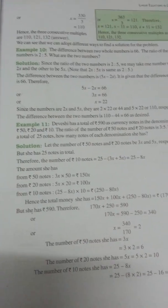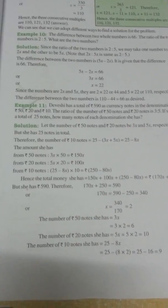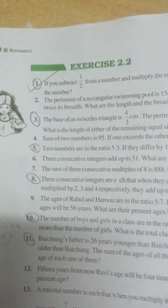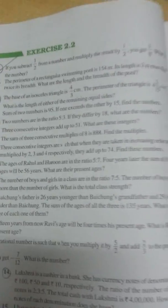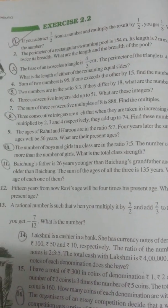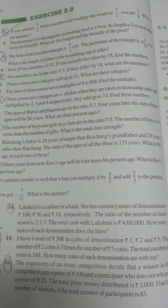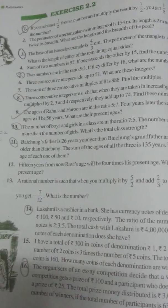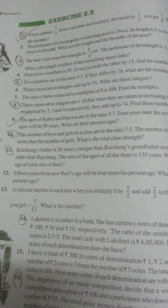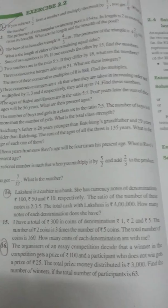Example 11 is again very important because it is a money and currency note question. Moving to Exercise 2.2, I have marked the important questions: question 1 is very important, question 2 you have already practiced from the example, then question 3, question 5 is very important, question 8 is again very important, question 9 is also very important, and question 14 and 15 as I have already told you.